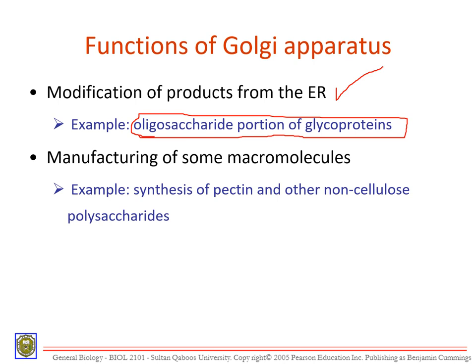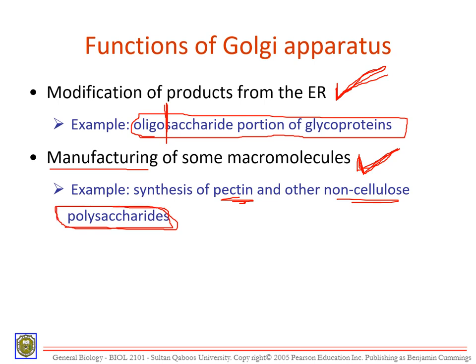An example is the oligosaccharides portion of glycoproteins, found on the outer layer of the plasma membrane, which are modified in the Golgi body. Oligosaccharide — saccharide comes from sugars, and oligo is a number between 3 and 10, so oligosaccharides are sugars with 3 to 10 monomers. The second function is manufacturing of some macromolecules — the Golgi body synthesizes pectins and other non-cellulose polysaccharides.